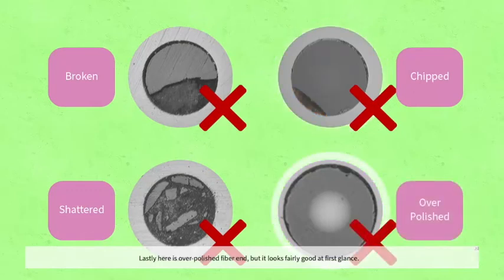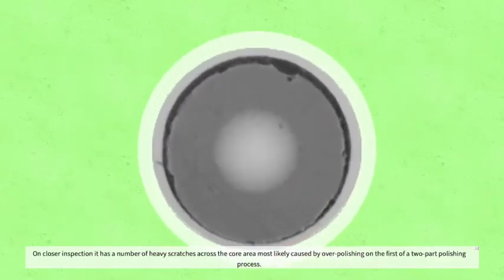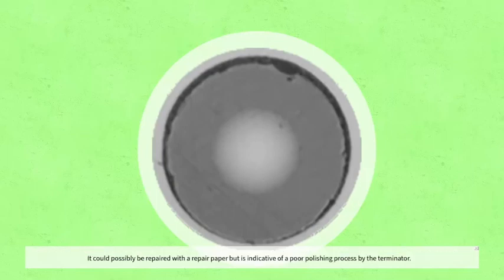Lastly, here is an over-polished fiber end, but it looks fairly good at first glance. On closer inspection, it has a number of heavy scratches across the core area, most likely caused by over-polishing on the first of a two-part polishing process. It could possibly be repaired with a repair paper but is indicative of a poor polishing process by the terminator.